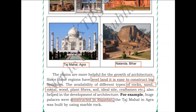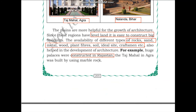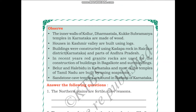Huge palaces were constructed in Rajasthan, and the Taj Mahal in Agra was built using marble rock. The inner walls of Kollur, Dharmasthala, and Kukke Subramanya temples in Karnataka are made of wood, because wood was abundantly available there. Houses in Kashmir are built using logs, and buildings are constructed using Kadapa rocks in Raichur district of Karnataka and parts of Andhra Pradesh.